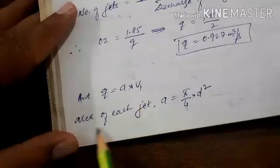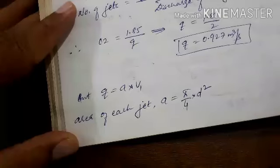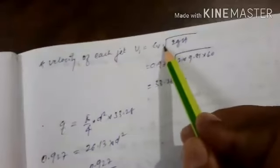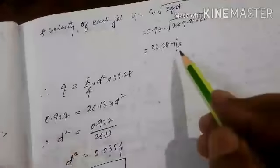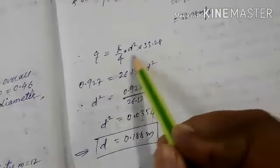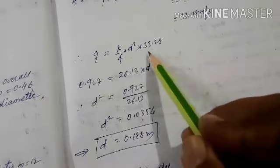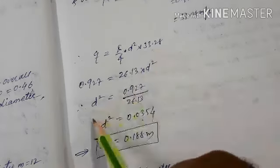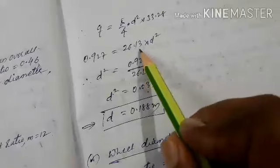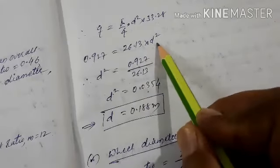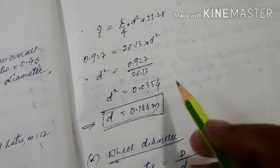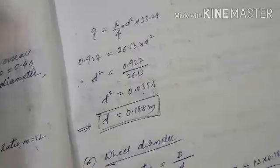Area of each jet = (π/4)d². Velocity V1 = Cv × √(2gH) = 33.28 meter per second. So q = (π/4)d² × 33.28 = 26.13·d². Since q = 0.925, solving gives jet diameter d = 0.188 meter.